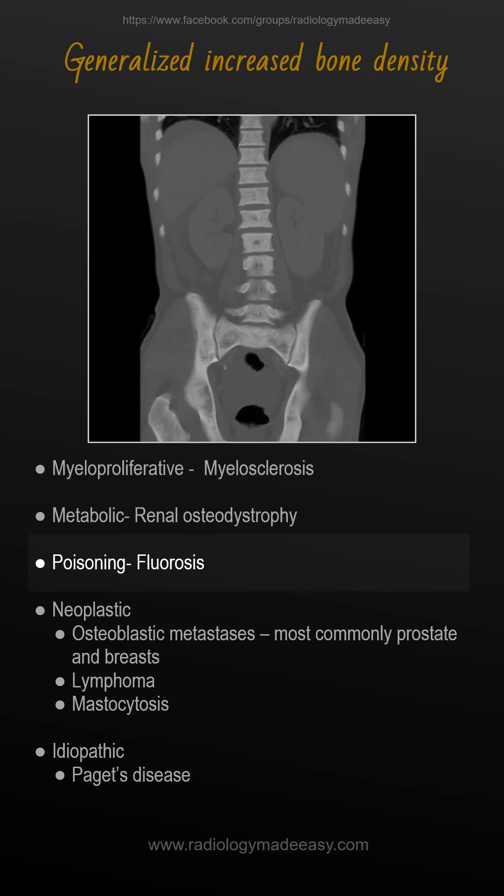Changes are most marked in the innominate bones and lumbar spine. We also have to consider neoplastic diseases like osteoblastic metastases, which are most commonly from prostate and breast, and also lymphoma metastases and mastocytosis, which also cause increased bone density. These neoplastic diseases are more commonly seen as multifocal than generalized.